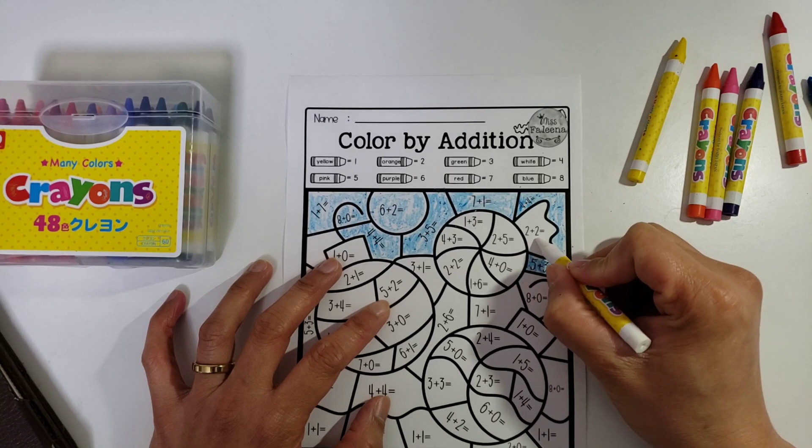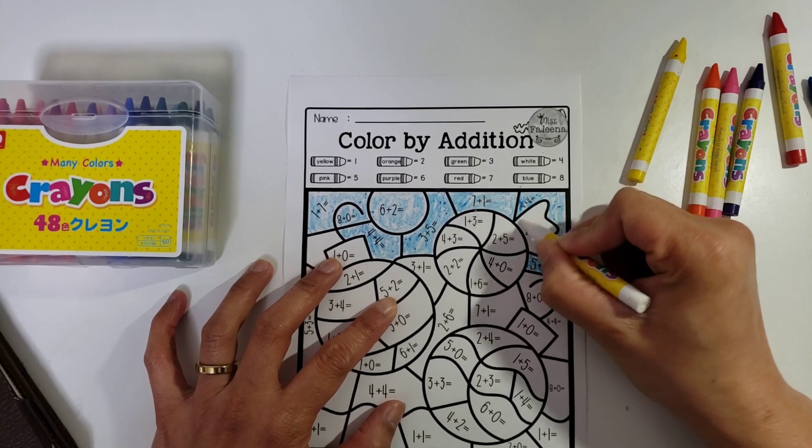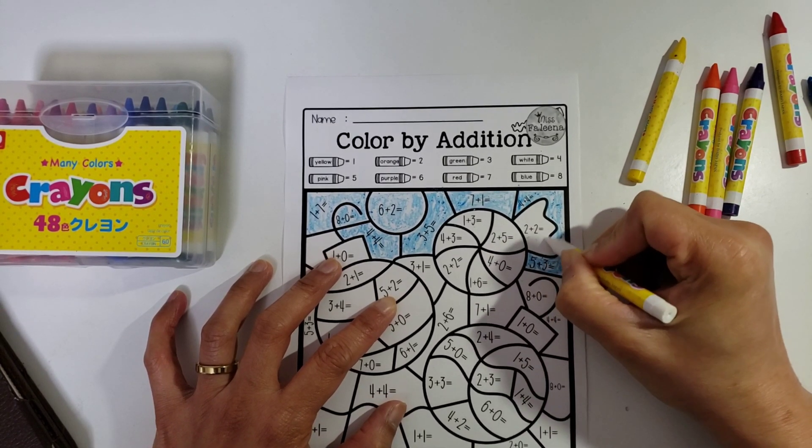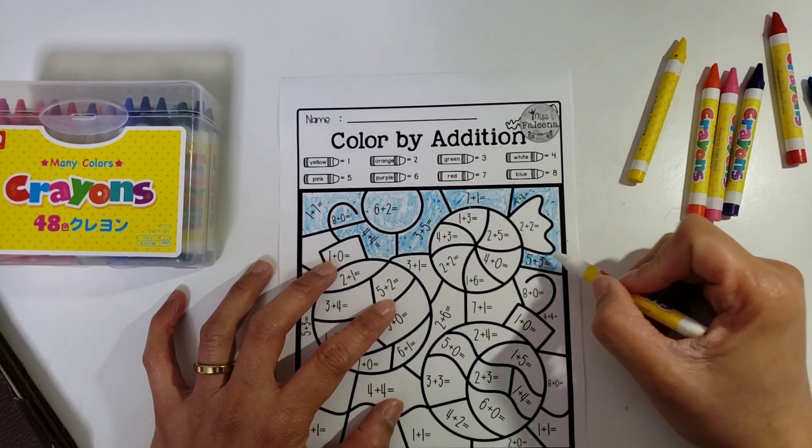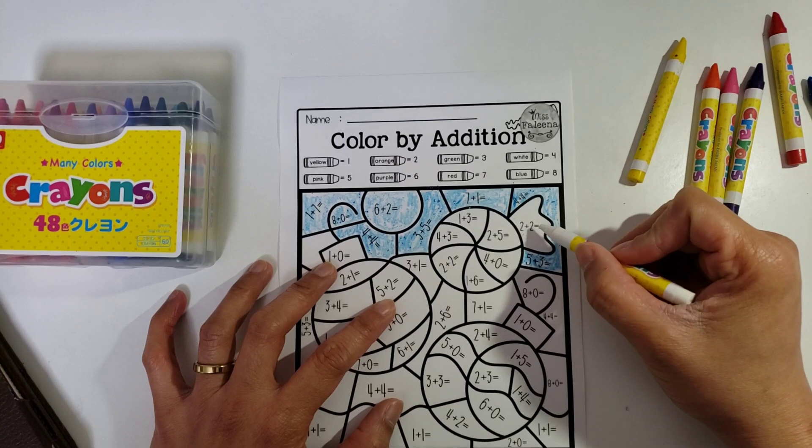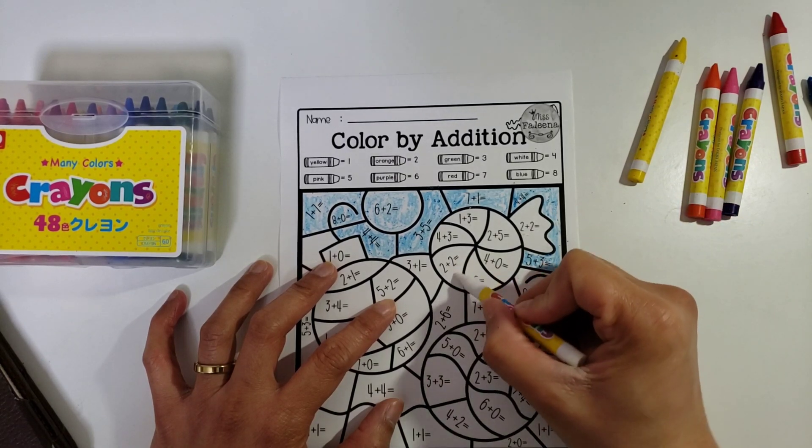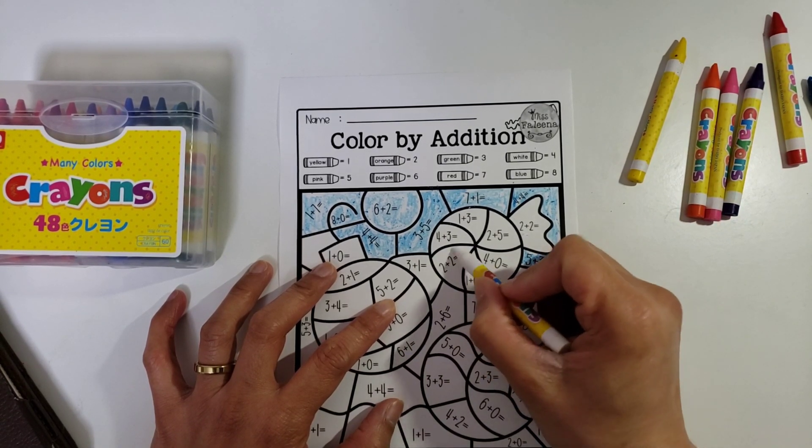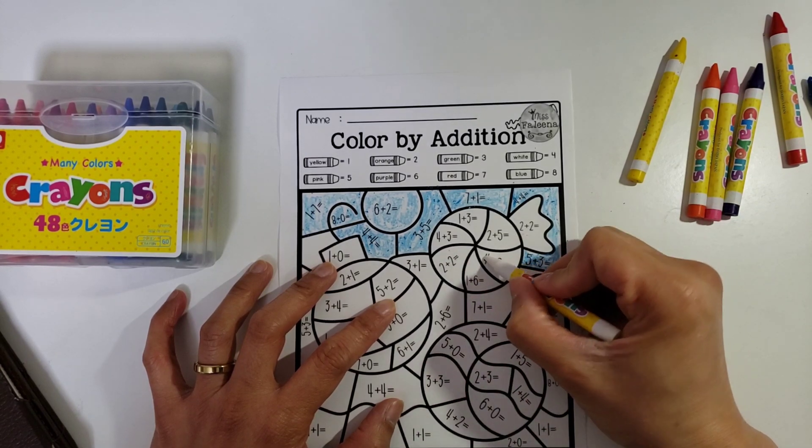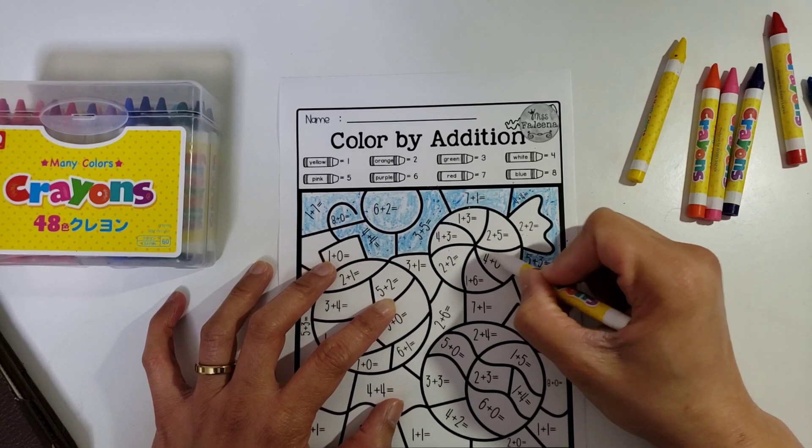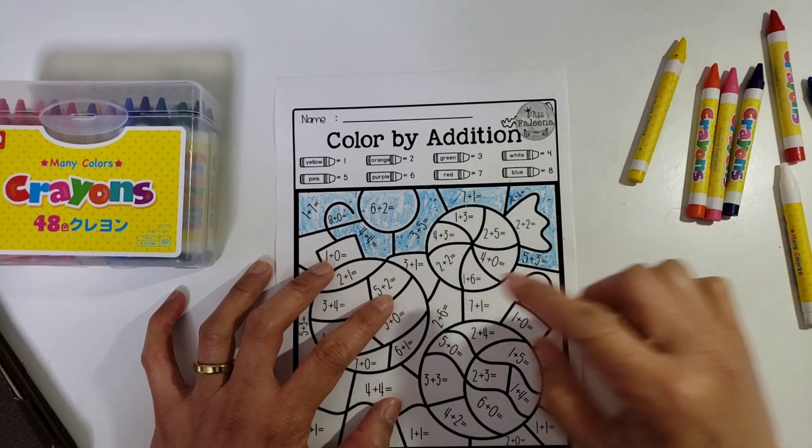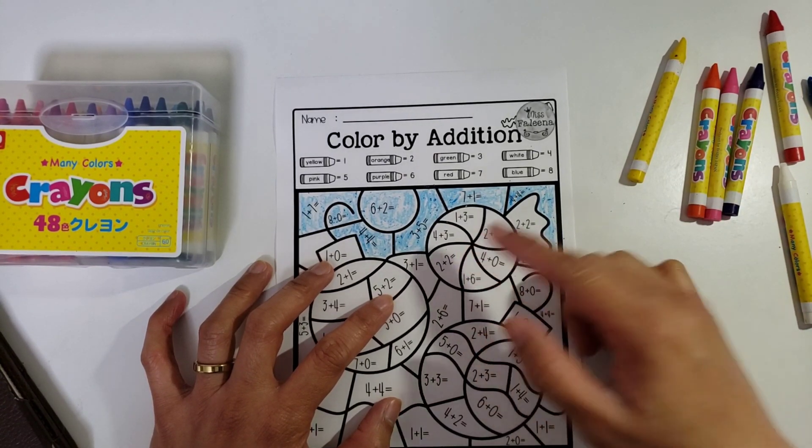And then the next one is two plus two equals four, it's also white. You can just leave it as is or you may color it white. And then this one is also white, two plus two equals four. And then four plus zero equals four.